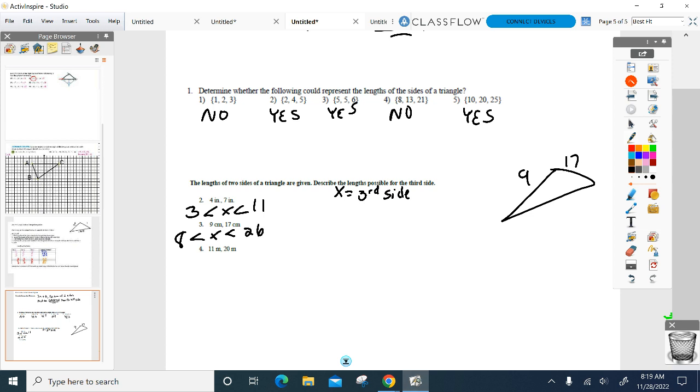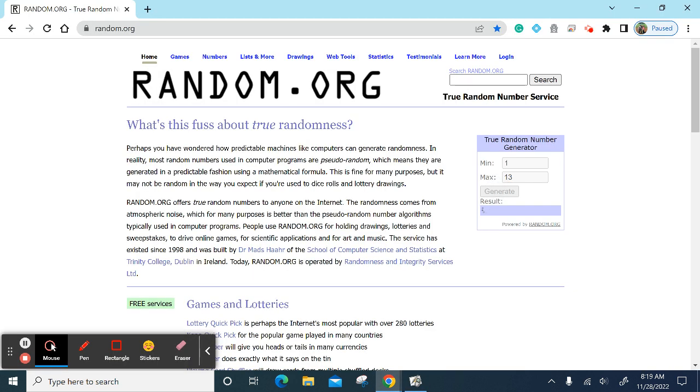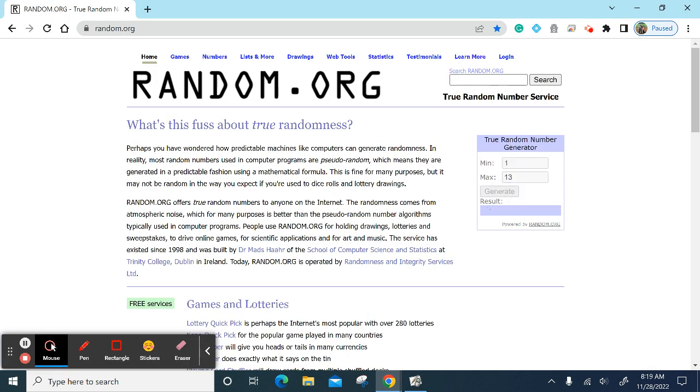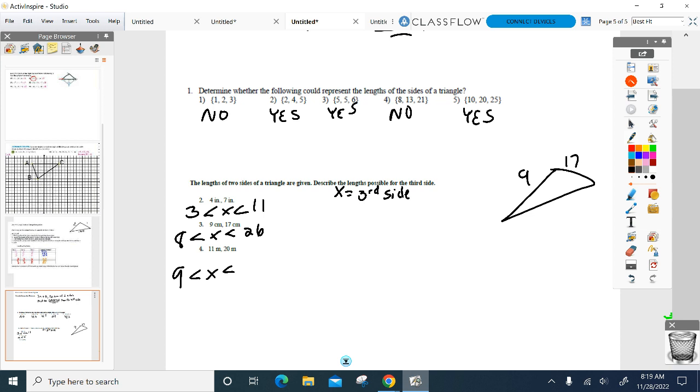What if my two sides are 11 and 20? Can't be any—has to be greater than 9. But has to be less than—your third side has to be less than 31. Okay, so a little shortcut instead of having to list out all the sides. Questions?